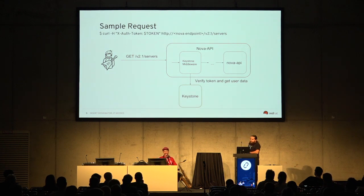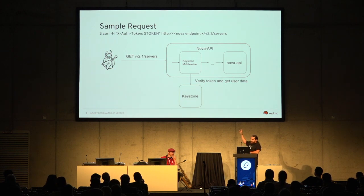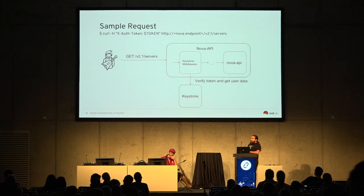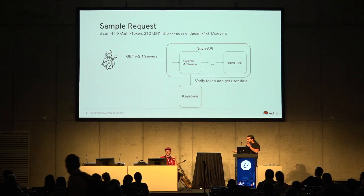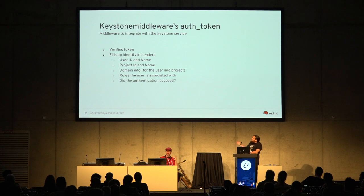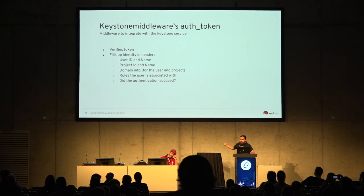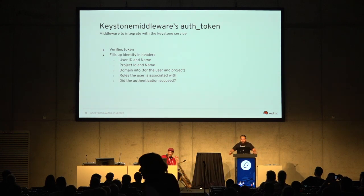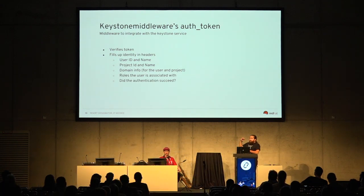Subsequently, you're going to get a response — yes, this token is valid, go forward — or maybe not, it has expired. It'll give a lot of information back about the user, and the middleware can then pass that information towards Nova, which will do whatever it needs to do. Keystone middleware verifies the token and gives you a lot of information: the user ID, the name, project ID, domain ID, whether the token is valid, and what the roles are for the user — which is a very important thing. All of this is filled up by Keystone middleware.